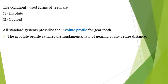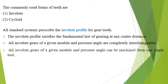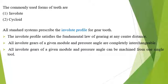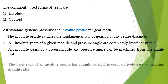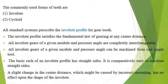The involute profile satisfies the fundamental law of gearing at any center distance. All involute gears of a given module and pressure angle are completely interchangeable, and can be machined from one single tool. The basic rack of the involute profile has straight sides, making it comparatively easy to machine. Any changes in center distance due to incorrect mounting have no effect on the shape of the involute profile.